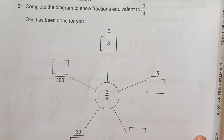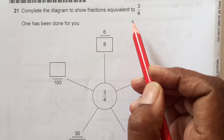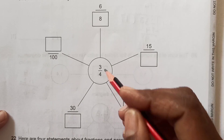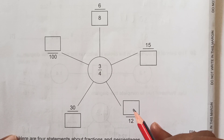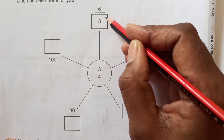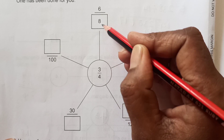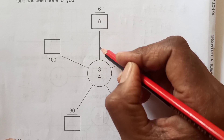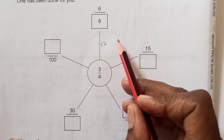Question number 21: Complete the diagram to show fractions equivalent to 3/4. We have this diagram here. 3 over 4 means all these fractions outside shown are equivalent to this. The one is done already. If you multiply by 2, 3 times 2 gives you 6 and 4 times 2 gives you 8. So that means we multiplied numerator and denominator by 2.